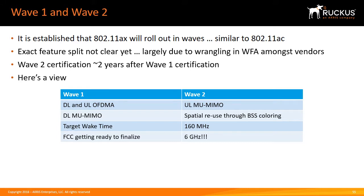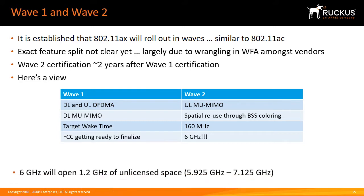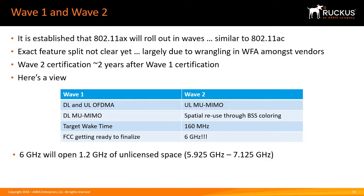Wave 2 will include uplink multi-user MIMO, spatial reuse using BSS coloring, 160 MHz, and 6 GHz. The FCC is still working on finalizing the release of the 6 GHz unlicensed spectrum, which will open up 1.2 GHz of unlicensed space in the 5.925 to 7.125 GHz range.